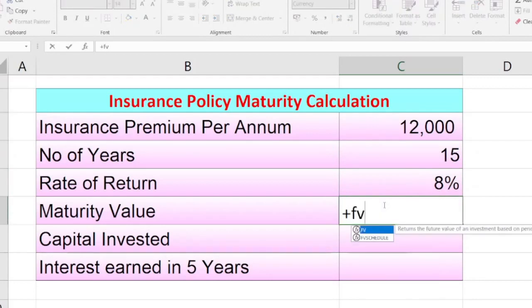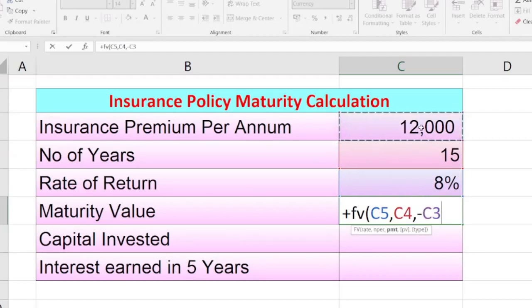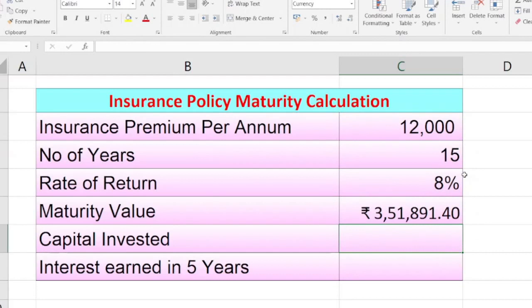We will apply the same formula equals FV bracket. Here the rate of interest is 8%. As we are paying the premium on a yearly basis, we will select it as is. We will not divide it by 12. Then comma, then number of periods. How many years am I going to pay? 15, I will select. Then comma. Here PMT is not required, so I will just do nothing. Now PV present value. I will add the minus sign because I want the amount in a positive way. Select the insurance premium. Now two times comma. Here I also presume that I am earning the interest on the same day when I am investing the amount. I will enter one, close the bracket, and the maturity will be 3,51,891.